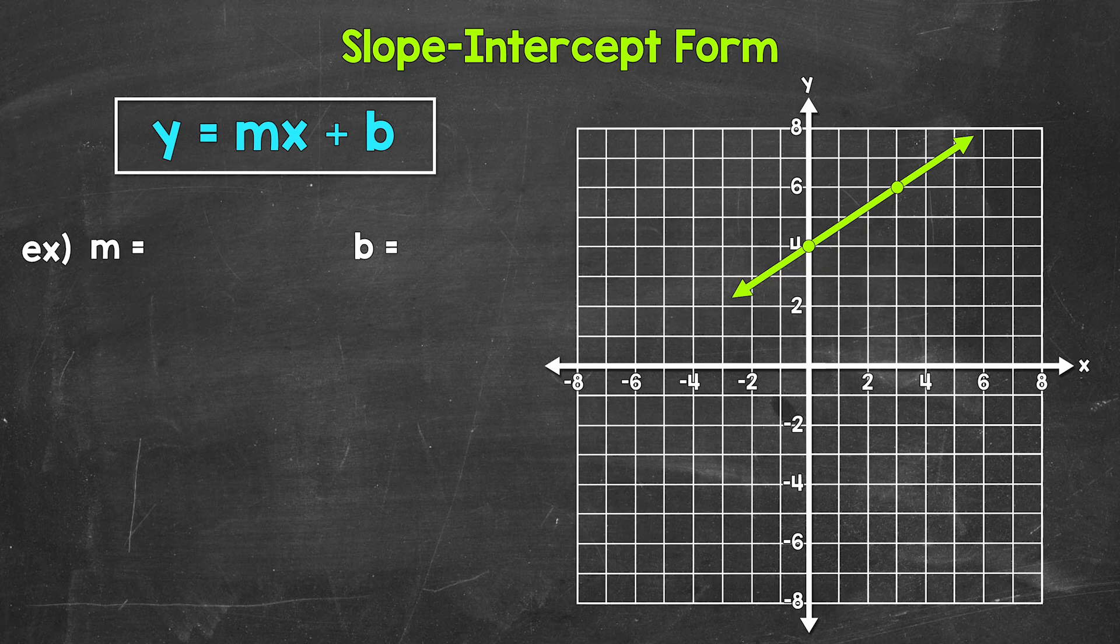Now, all we need to do here is find the slope and y-intercept. Then we plug those in to our equation for m and b. And we have our equation. The slope and y-intercept give us all the information we need for the equation of a line.